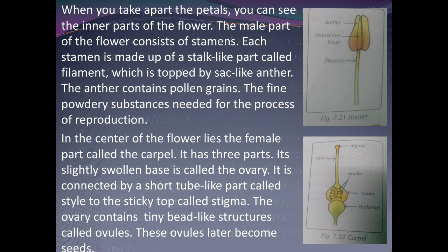When you take apart the petals, you can see the inner parts of the flower. The male part of the flower consists of the stamen. Stamen is made up of a stalk-like part called the filament, which is topped by a sac-like anther. The anther contains pollen grains, the fine powdery substance needed for the process of reproduction.